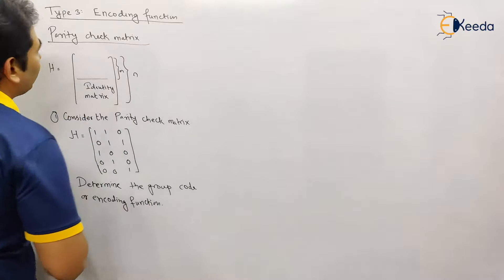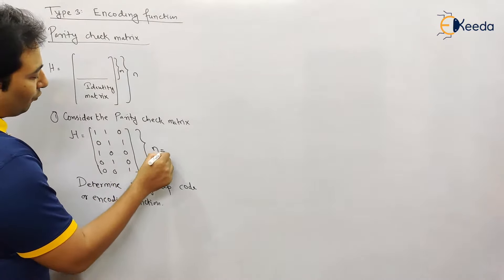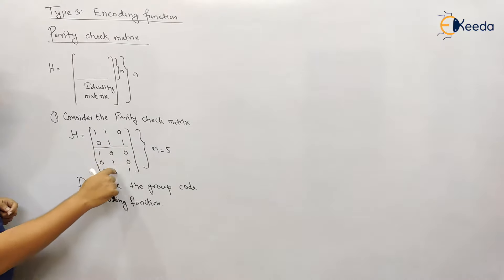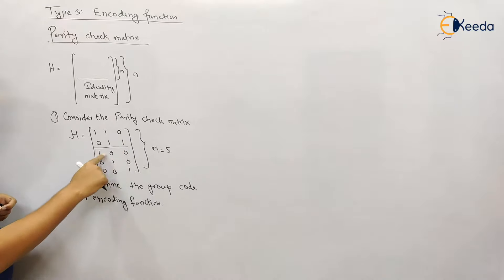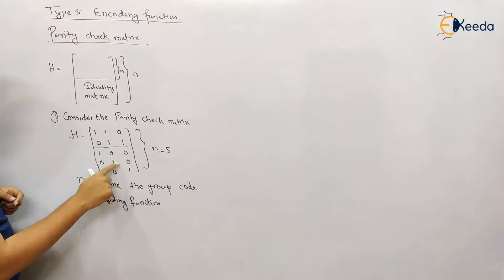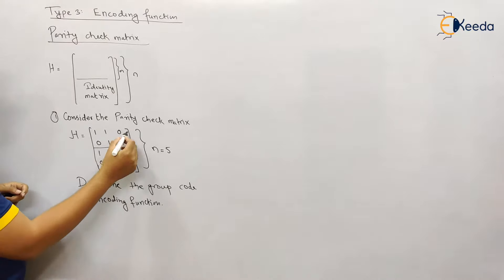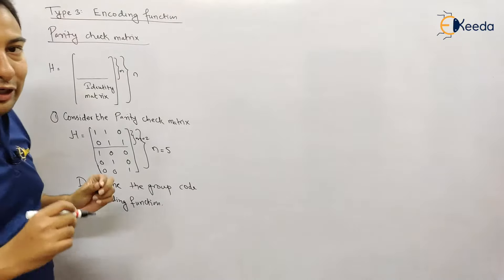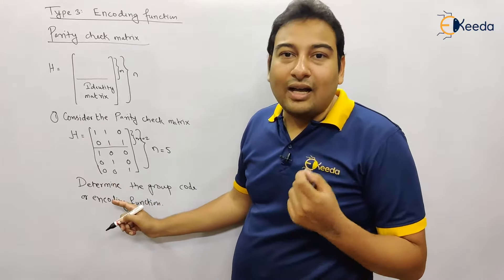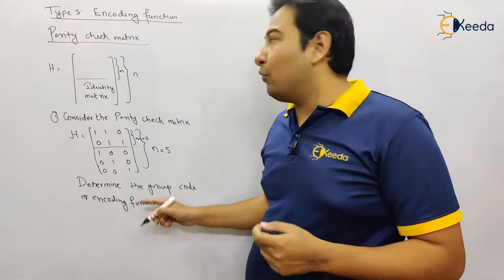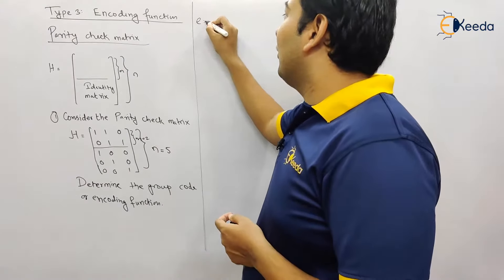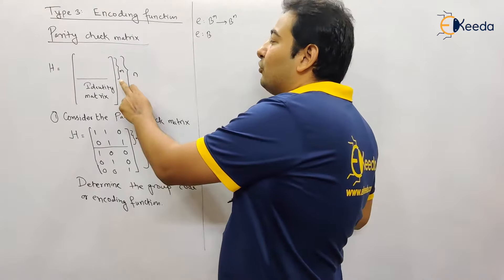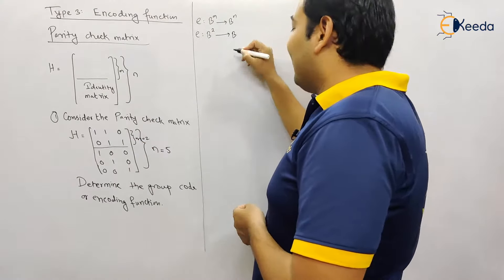In this particular parity check matrix, n equals the number of rows — we have one, two, three, four, five — so n equals five. The identity matrix here is of order 3×3. An identity matrix means we get one in the diagonal and zero at the remaining places. If you remove this part, what remains is m, and here m equals two. It is very important to identify m and n, because to determine the group code or encoding function we must find m and n. Here m equals two and n equals five.